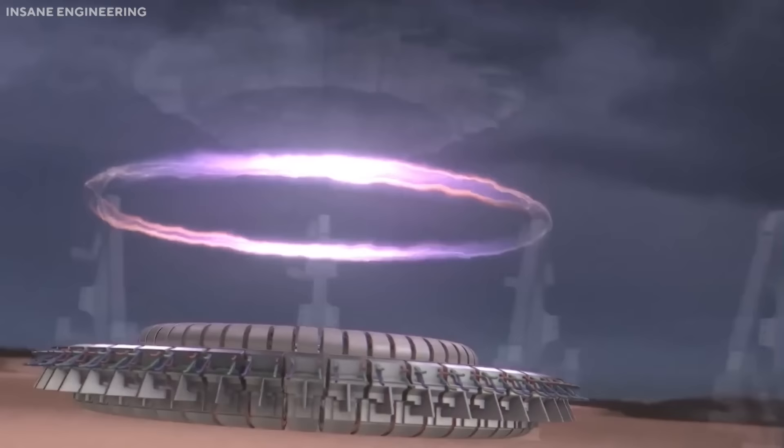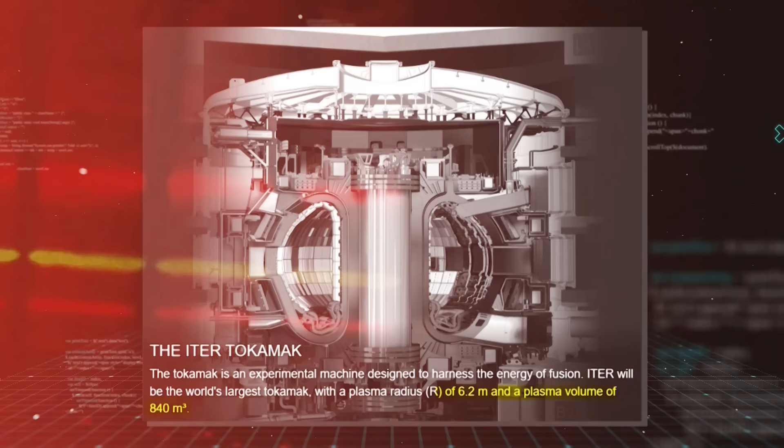The ITER reactor is based on the tokamak principle, but with several innovations and enhancements. The ITER tokamak will have a major radius of 6.2 meters and a plasma volume of 840 cubic meters, making it the largest and most complex fusion machine ever built.